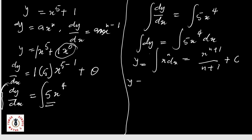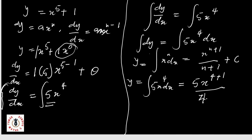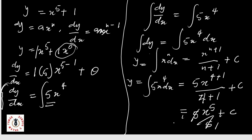So y equals the integral of 5x raised to power four dx, which equals 5x raised to power four plus one over four plus one plus C. That is 5x raised to power five over five plus C. Since 5 over 5 equals one, this simplifies to x raised to power five plus C, where C is a constant.